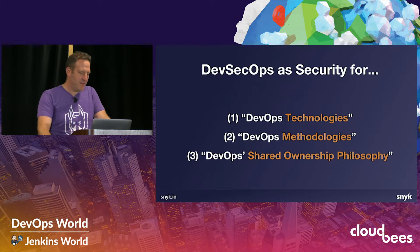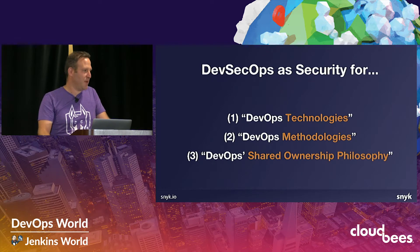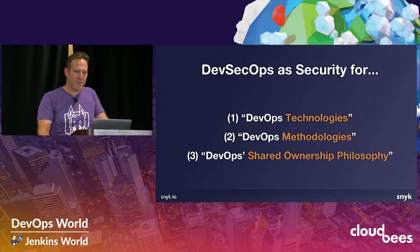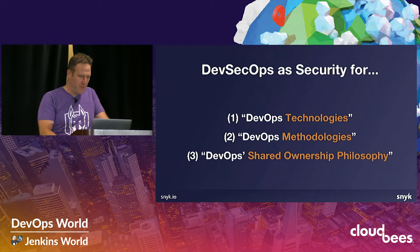Today I'm going to give you my interpretation of what DevSecOps means, and specifically three primary meanings to it, which mostly correlate to the three meanings of DevOps. In my perspective, DevSecOps is attributed as security for either DevOps technologies, DevOps methodologies, or DevOps shared ownership philosophy — and I'll explain what they mean.